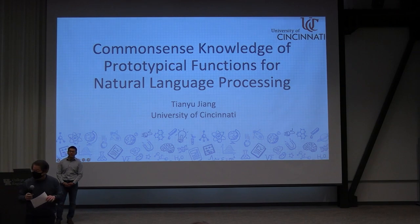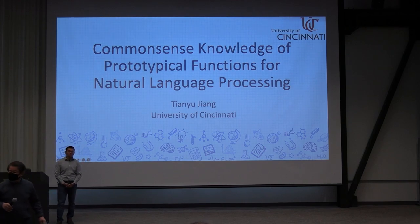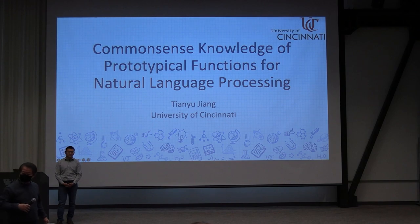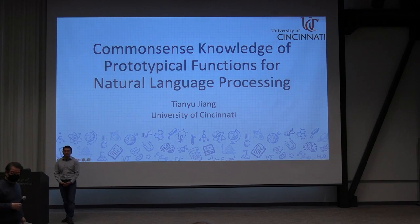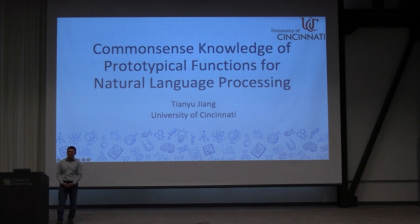When people talk, we often omit common-sense information. The machine, of course, does not know this kind of common-sense information. Therefore, there's a problem when human beings and machines talk — humans usually do not provide that common-sense information. Therefore, the machine has to be trained on common-sense information so that the conversation can go smoothly. That's the focus of today's talk. Dr. Jiang from the University of Utah — which is very famous for photography during the early days — is here in person, so let's welcome Dr. Jiang for his talk.